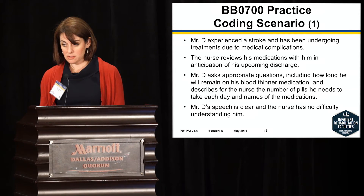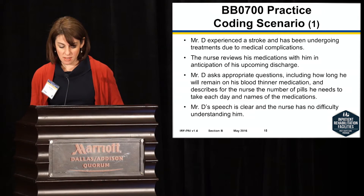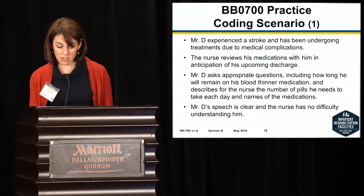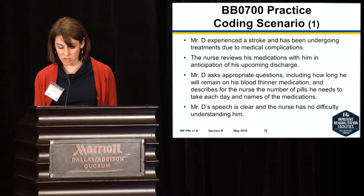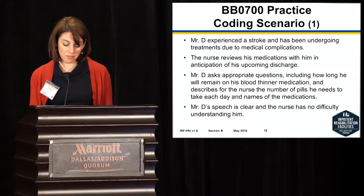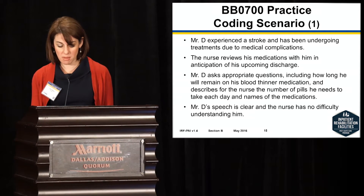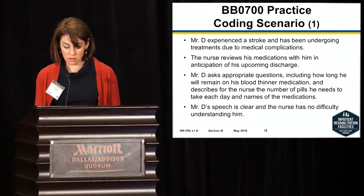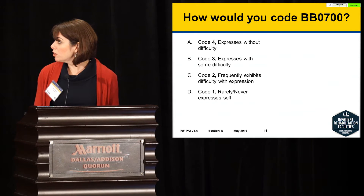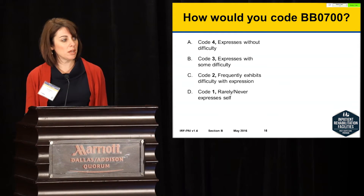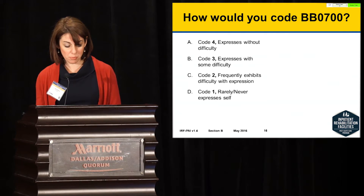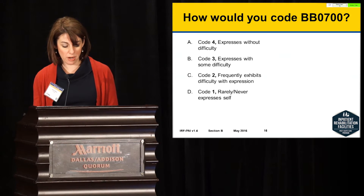Practice scenario: Mr. D experienced a stroke and has been undergoing treatments due to medical complications. The nurse reviews his medications with him in anticipation of his upcoming discharge. Mr. D asks appropriate questions — including how long he will remain on his blood thinner medication — and describes the number of pills he needs to take each day and the names of the medications. Mr. D's speech is clear and the nurse has no difficulty understanding him. Would you code him a 4, 3, 2, or 1?